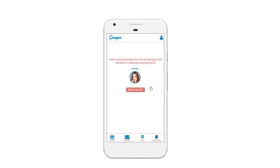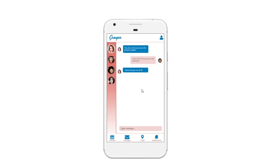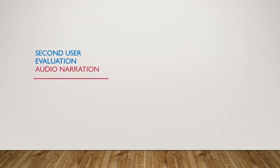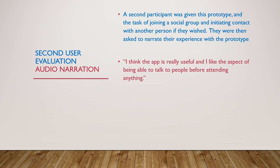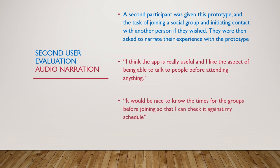Finally, there is also a simplified hub for communications. A second participant was given this prototype and the task of joining a social group and initiating contact with another person if they wished. They were then asked to narrate their experience with the prototype. Some quotes from their narration included: 'I think the app is really useful, and I like the aspect of being able to talk to people before attending anything,' and 'it would be nice to know the times for the groups before joining so that I can check it against my schedule.'